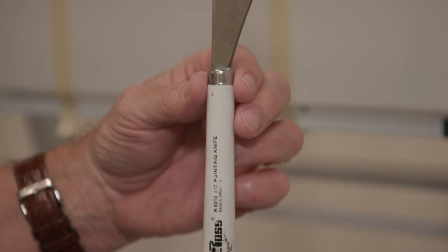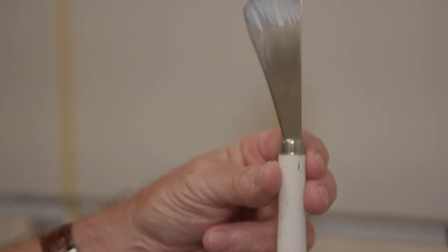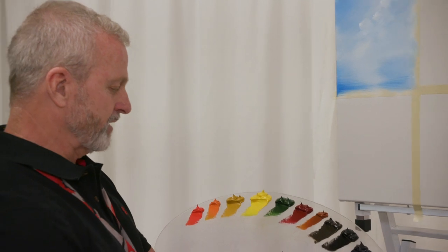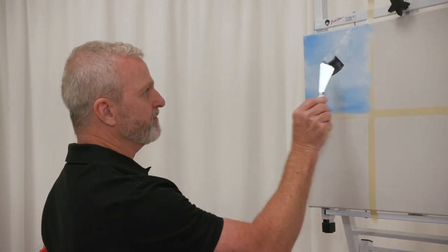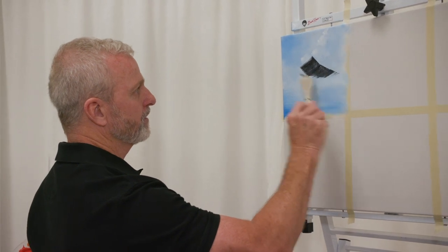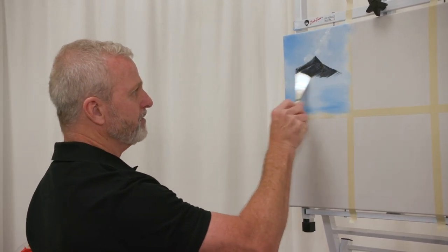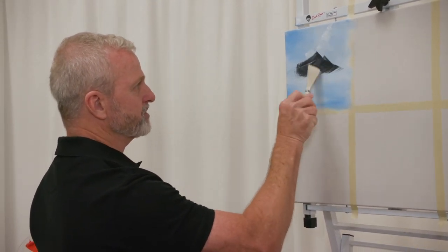I also have the Bob Ross knife here today. Now this is the large knife. And I'll be using some of the Mountain Mix to make a little bit of a base for a mountain. And if I just use the shape of this knife to block in my mountain, I've got an instant shape there.